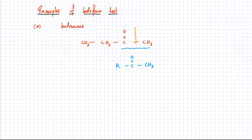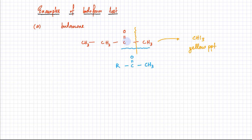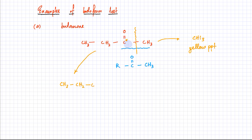The methyl part breaks away and ends up forming a yellow precipitate of CHI₃. The carbon on the left-hand side — the rest of the molecule — breaks away and forms a carboxylic acid. You'll have CH₃CH₂ and that highlighted carbon converted into a carboxylic acid. But since the conditions are alkaline, you don't get the carboxylic acid — you get the carboxylate salt instead.